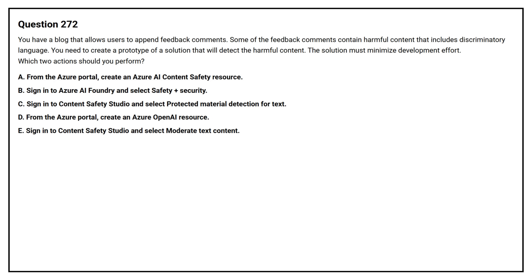Option A: From the Azure portal, create an Azure AI Content Safety resource. Option B: Sign in to Azure AI Foundry and select Safety plus Security. Option C: Sign in to Content Safety Studio and select protected material detection for text. Option D: From the Azure portal, create an Azure OpenAI resource. Option E: Sign in to Content Safety Studio and select moderate text content.